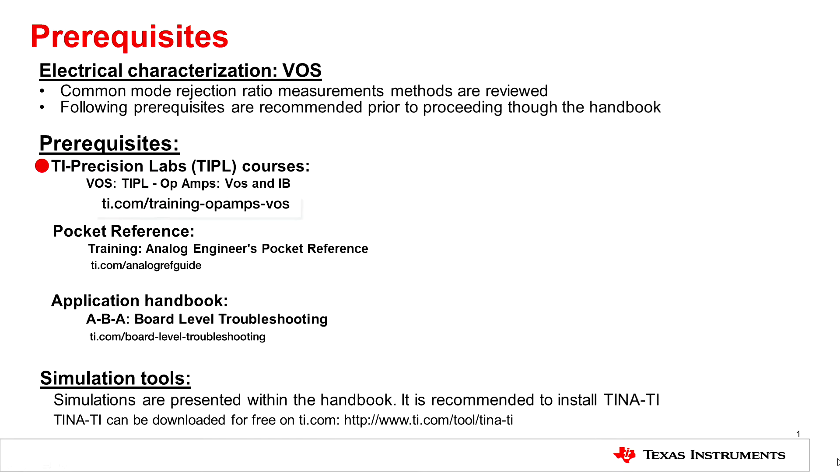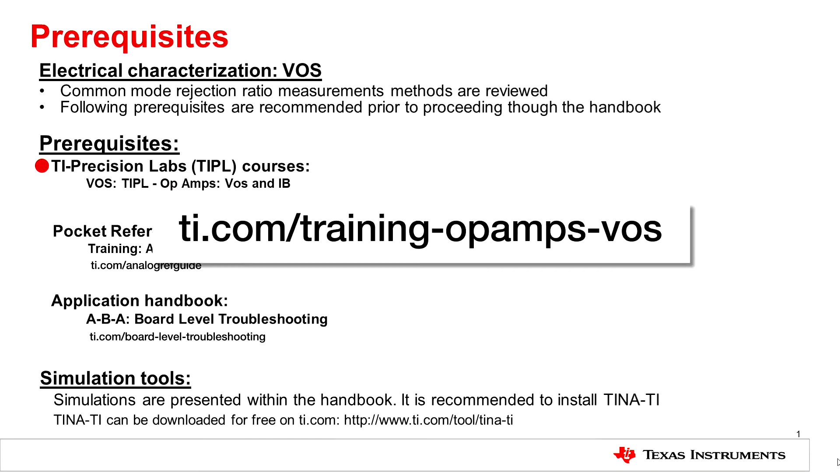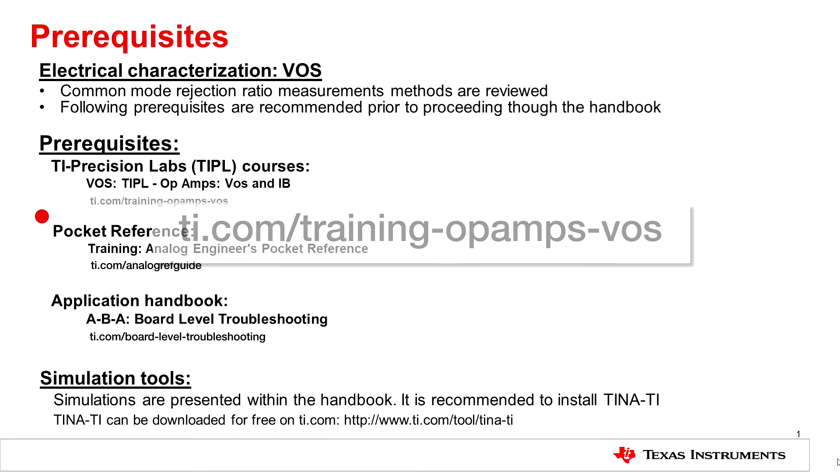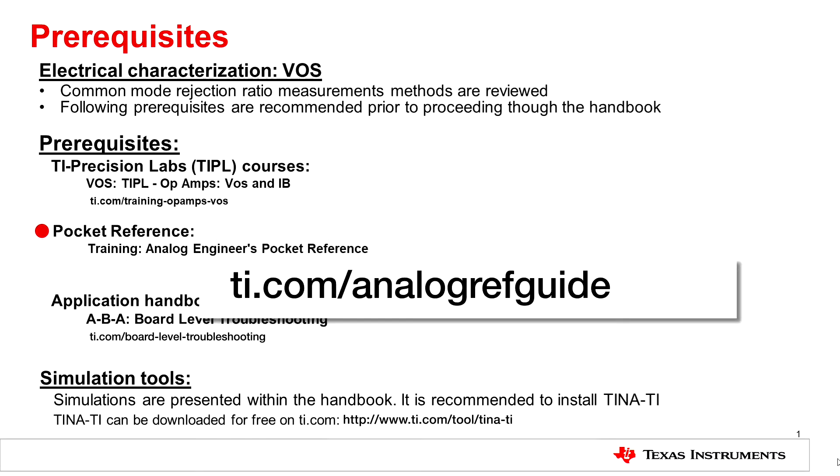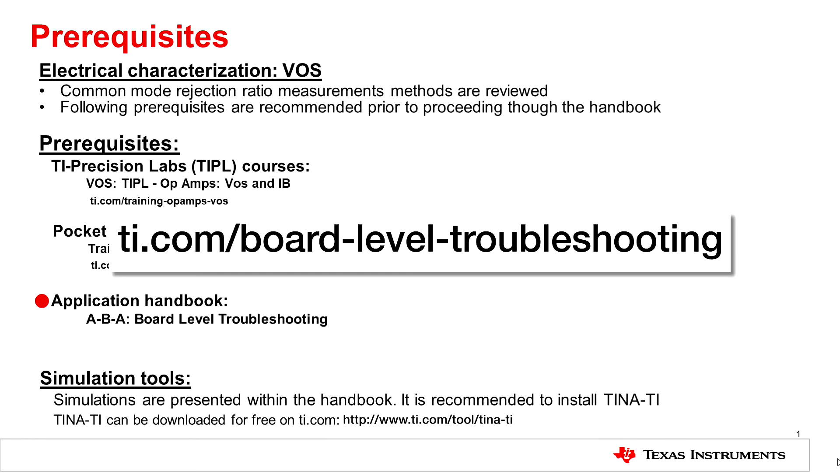Before moving into testing an amplifier's offset voltage, please note that there are some existing collaterals located on TI.com. Those collaterals can be found or noted as TI Precision Labs VOS, TI's Analog Engineer's Pocket Reference Guide, and a training on how to perform an ABA swap.